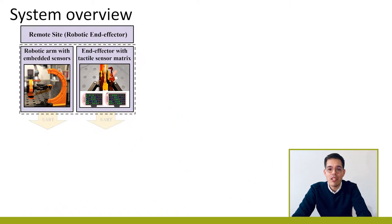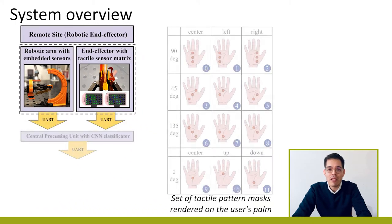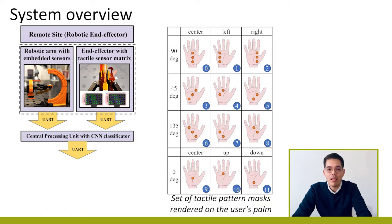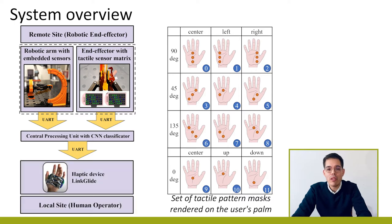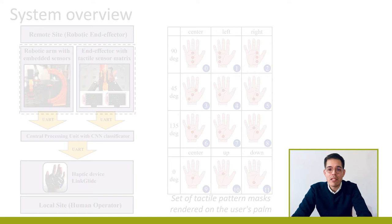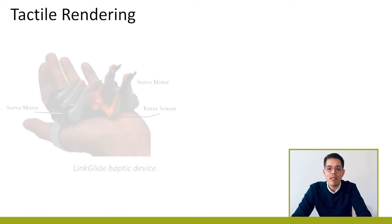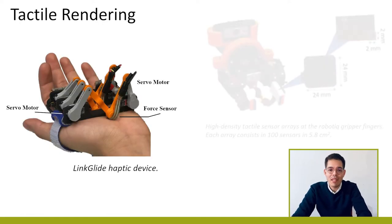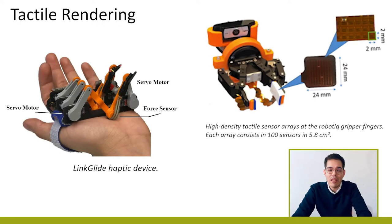The CNN generates a mask based on recognized tilt and position data, rendered as multi-contact tactile stimuli during the tele-manipulation. Since the resolution of the haptic interface is lower than that of the tactile sensor array, data preprocessing is required to achieve an effective tactile information exchange to the user.